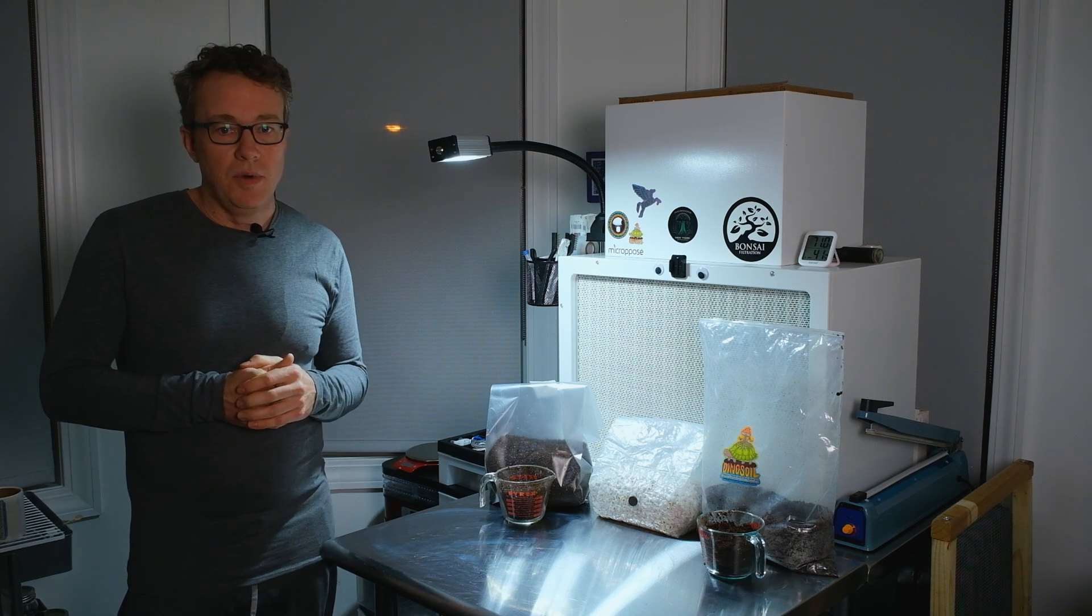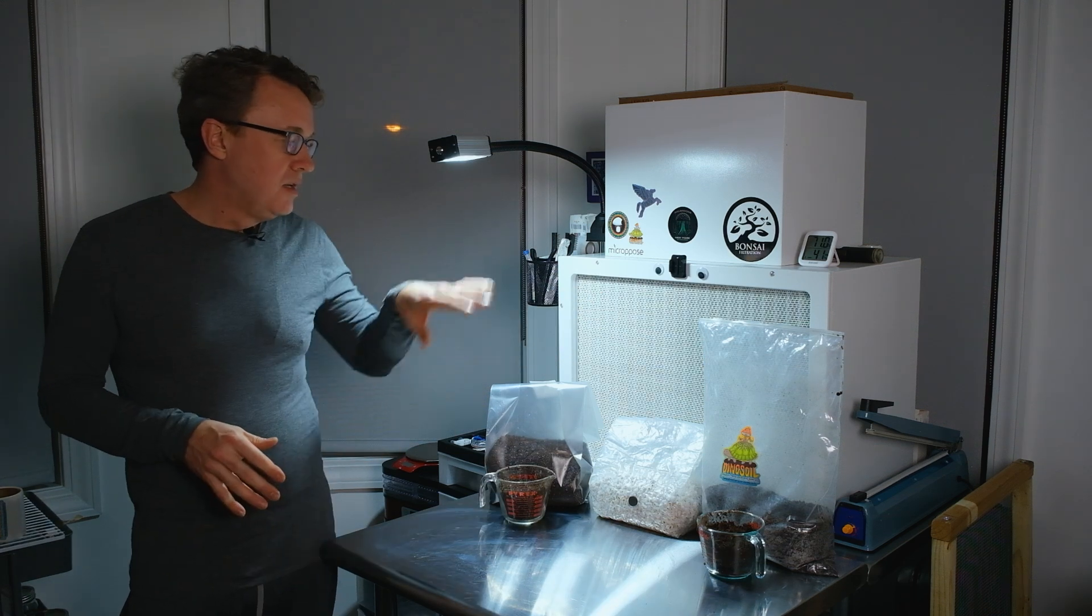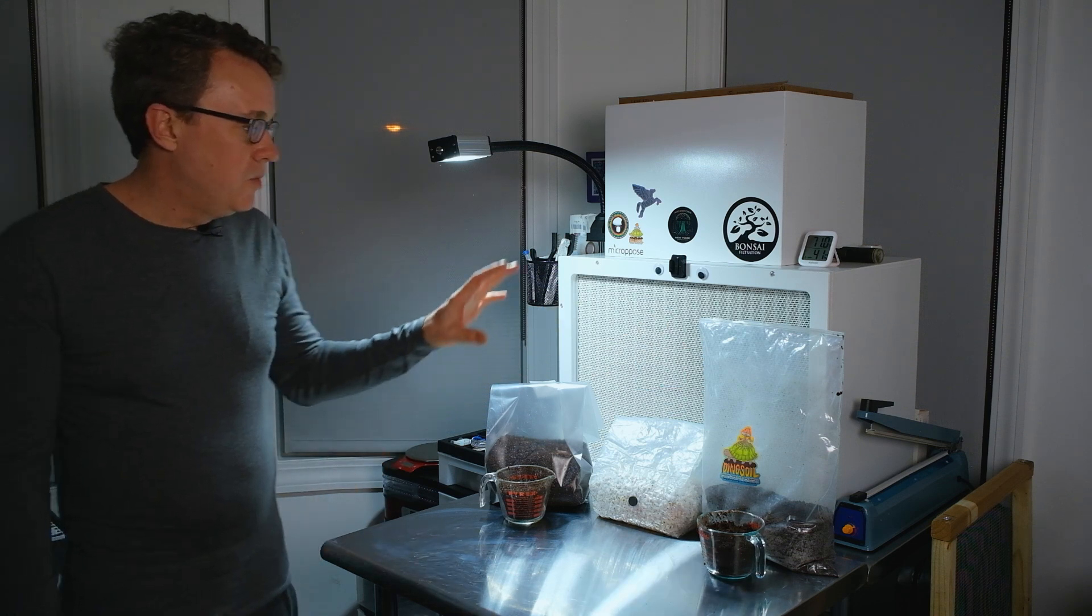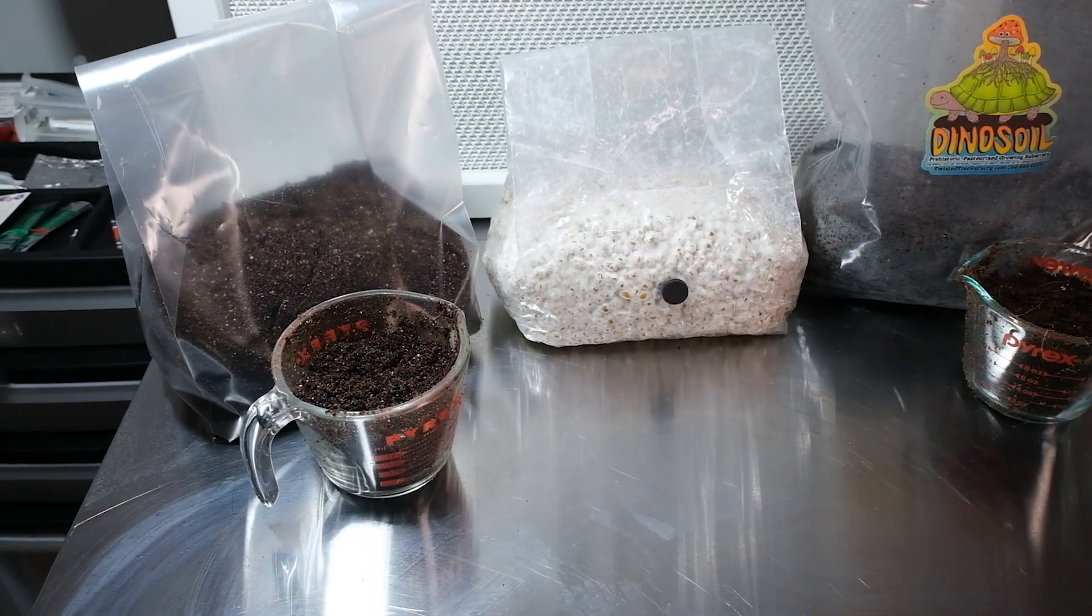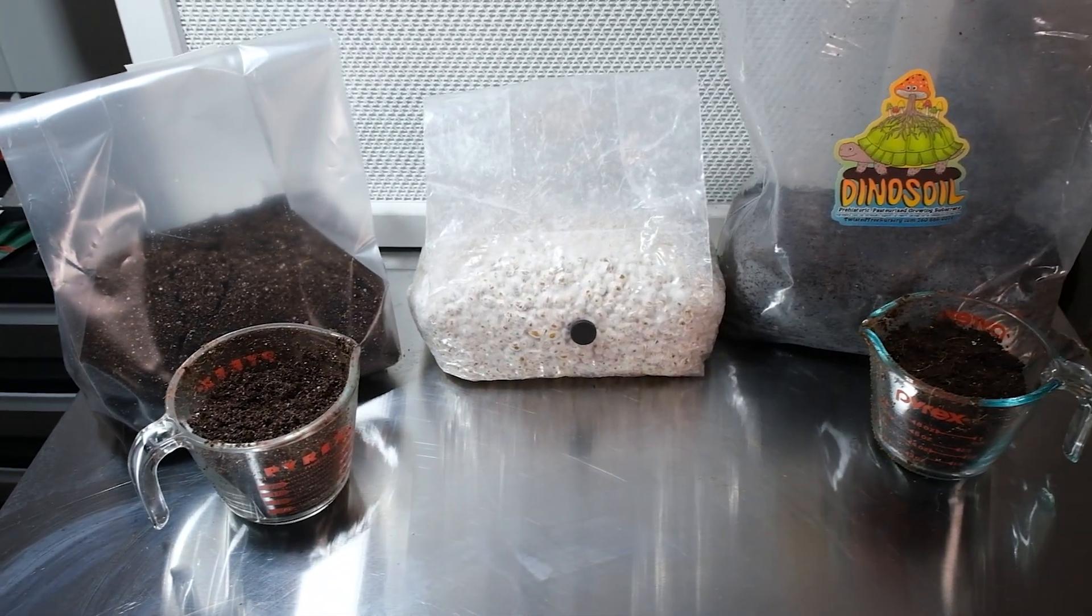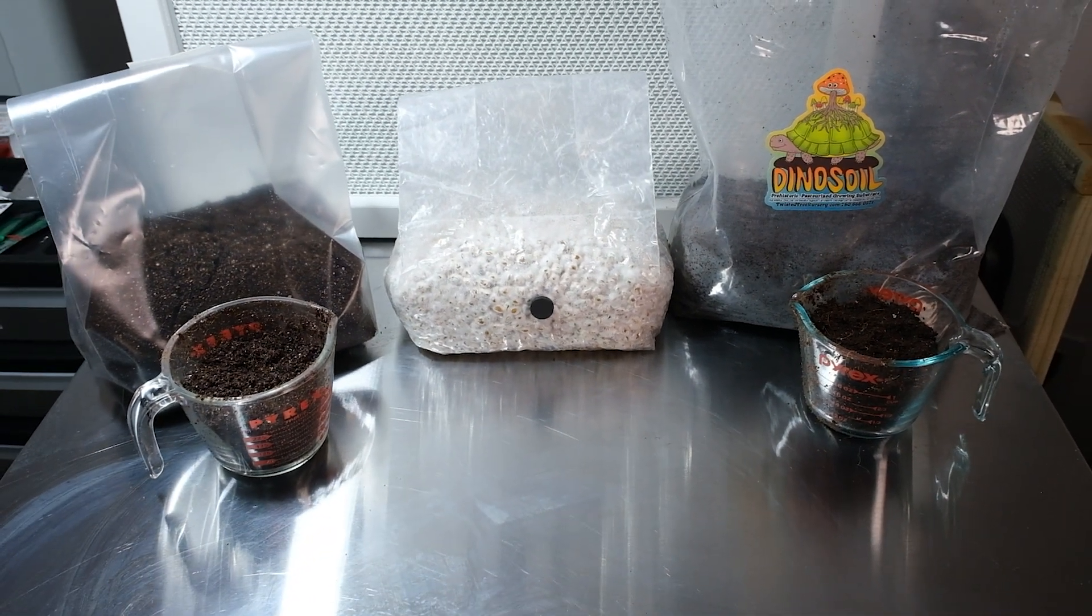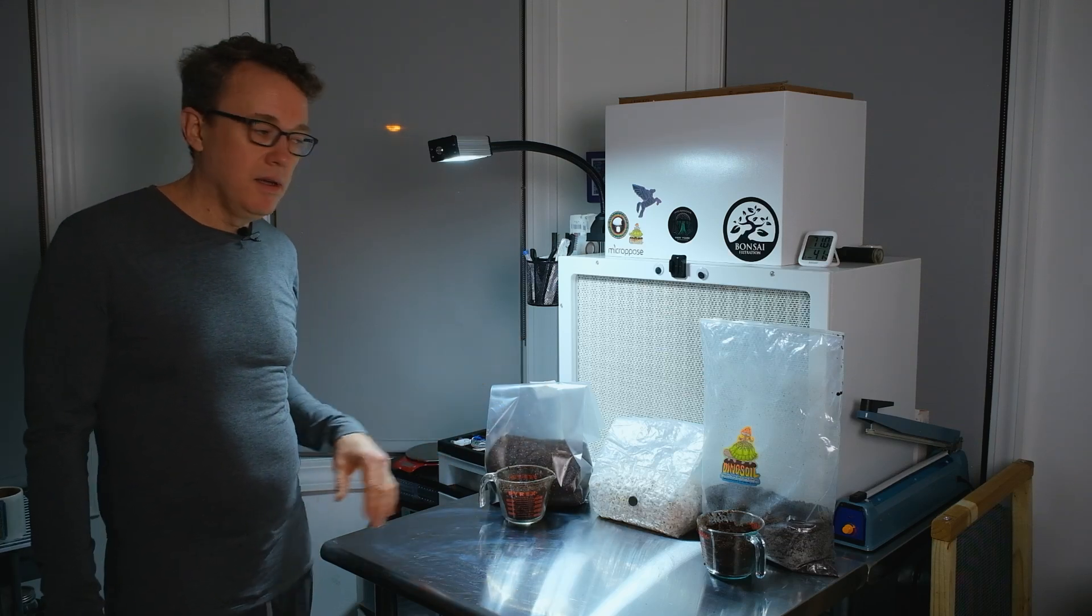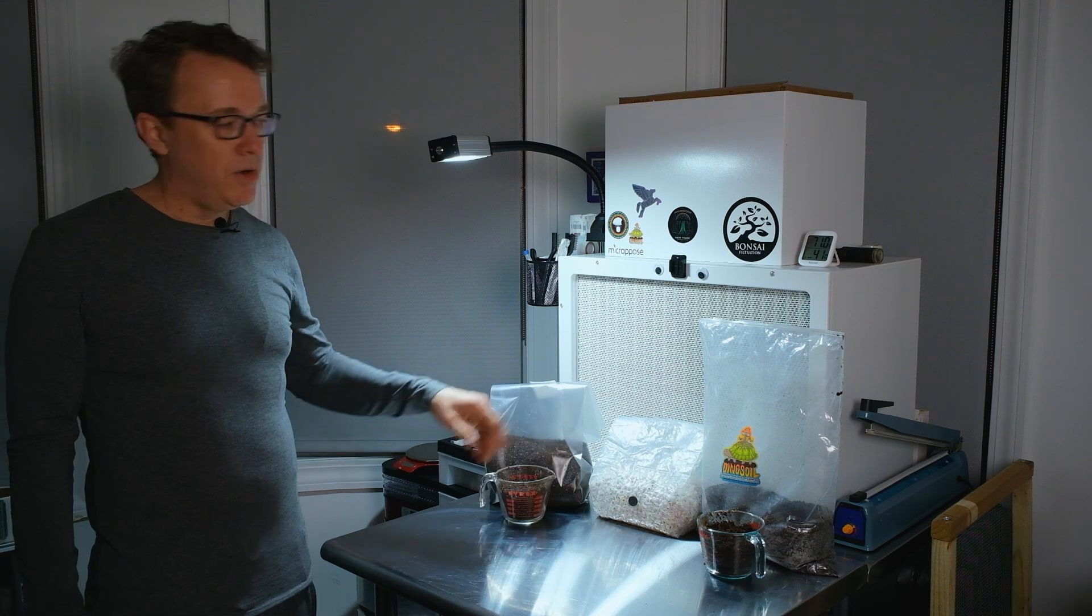So let's talk about today's video. What we're going to do today is a direct head-to-head comparison of dino soil from Tristan's Twisted Tree Nursery, which is a tortoise manure based mushroom substrate, and we're going to compare that head-to-head with just your basic CV recipe - no gypsum, no CVG, just CV: coco coir, vermiculite, bucket tech. This is very simple, it's tried and true, it works great.